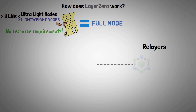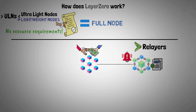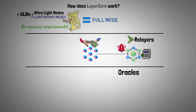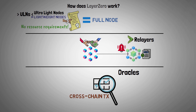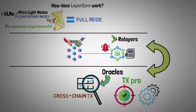Transmitting transaction proofs between blockchains is the responsibility of these entities. The relayer notifies the target blockchain of a transaction that has taken place on one blockchain by sending a proof of that transaction. Oracles provide the information needed to verify cross-chain transactions and collaborate with relayers to guarantee the accuracy and reliability of transaction proofs.